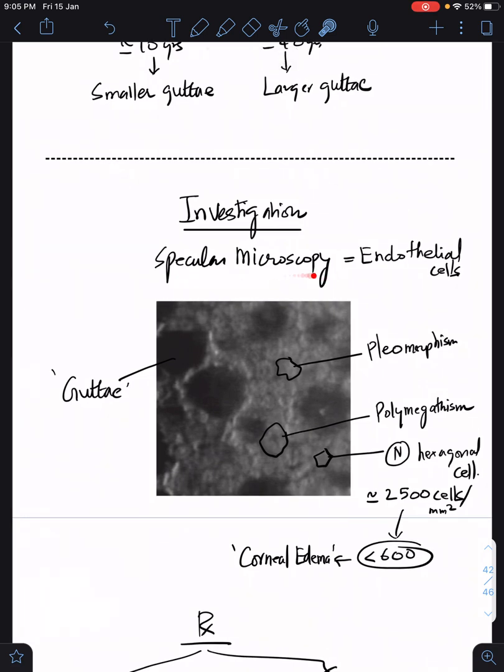One useful investigation is specular microscopy which assesses the endothelial cells. Normal endothelium is hexagon in shape and the normal cell count is approximately 2500 cells per mm squared in adults. When it goes less than 600, corneal edema is going to set in. Two important pathological variations happening in the endothelial cell: pleomorphism is abnormal shape, and polymegathism - when one endothelium cell is lost, the other endothelium cell enlarges in size to occupy that space. You can see these dark spots - they're nothing but the guttae in Fuchs endothelial corneal dystrophy.